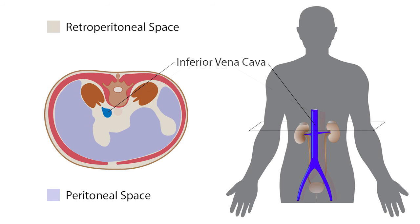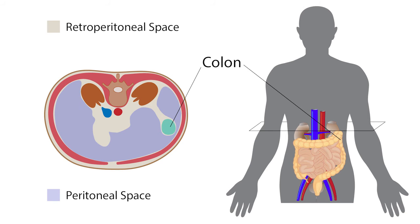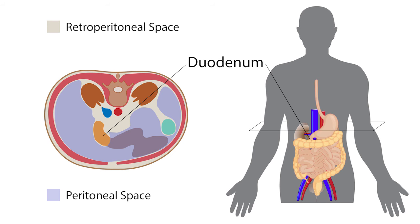Along with the kidneys, the inferior vena cava and aorta are located in the retroperitoneal space. Other organs include the colon, which is located lateral and ventral to the kidneys. The stomach, which lies ventral to the kidneys, is not located in the retroperitoneal cavity — rather it's located in the peritoneal space. However, the duodenum, which is connected to the stomach, is located ventral to the kidneys and in the retroperitoneal space.